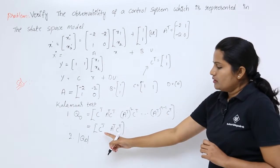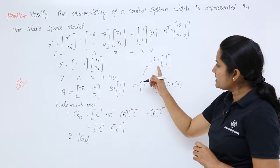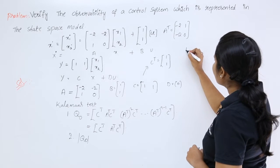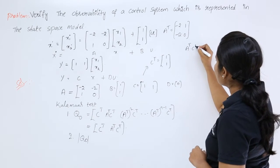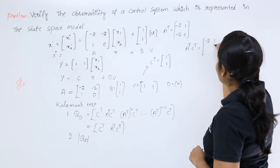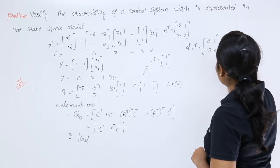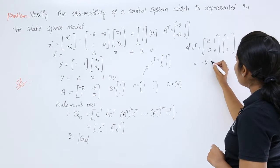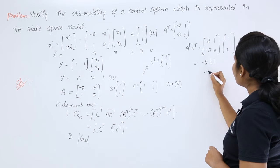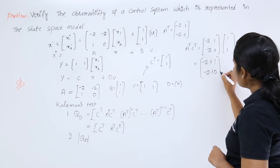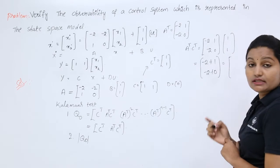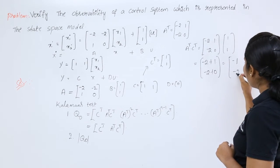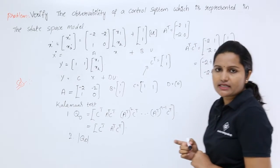To form the observability matrix we need A^T·C^T. Multiplying A^T by C^T: (minus 2×1 + minus 2×1) gives minus 2 plus minus 2... performing the matrix multiplication: row 1 gives (minus 2×1 + 1×1) = minus 1, and row 2 gives (minus 2×1 + 0×1) = minus 2. So A^T·C^T = (minus 1; minus 2).